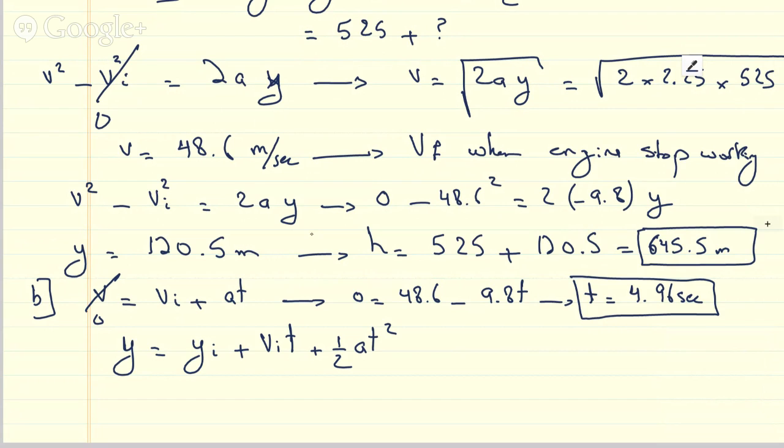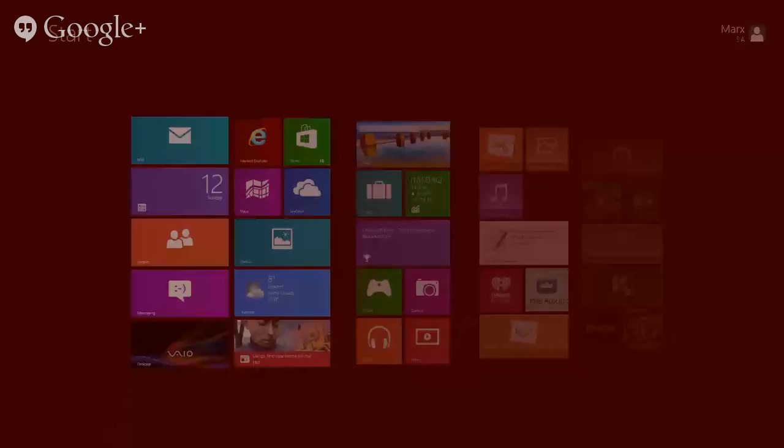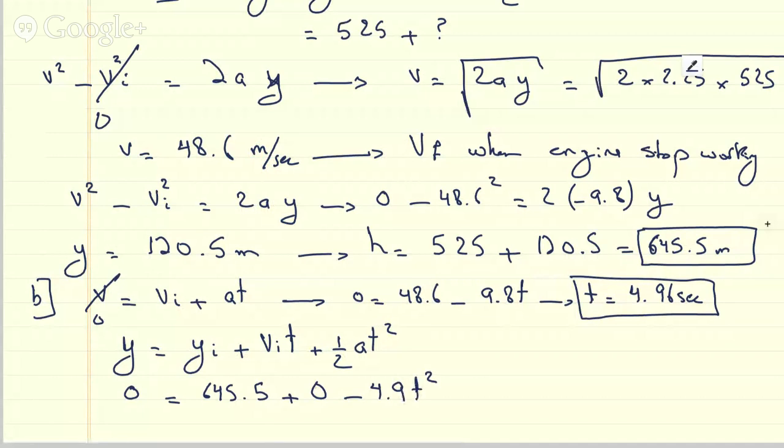So if our reference is the ground, then this y initial here will be finally, it's going to be at 0. This here is 645.5. V initial is 0. V initial is 0 minus 4.9 T squared because 9.8 over 2 is 4.9 squared.